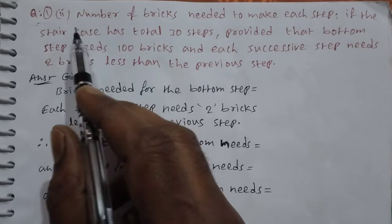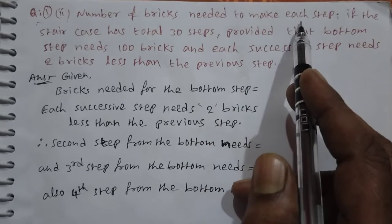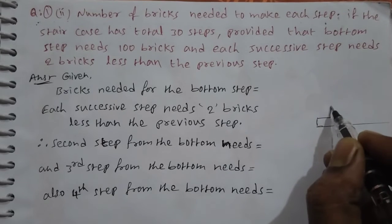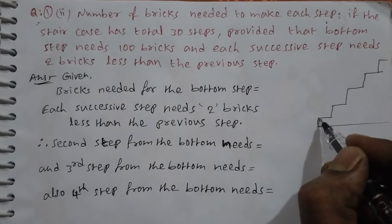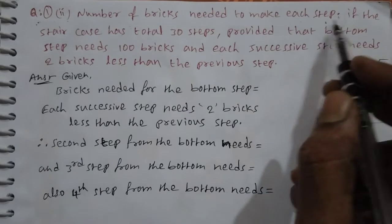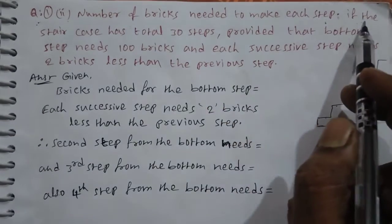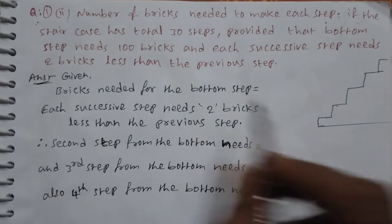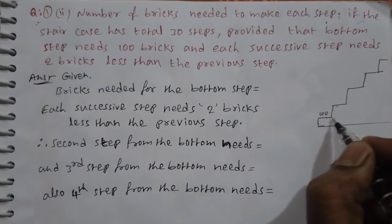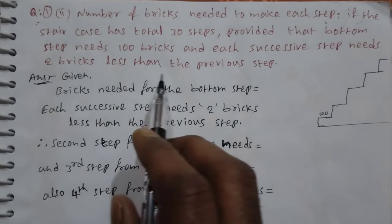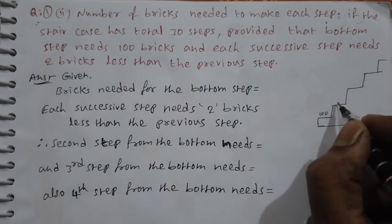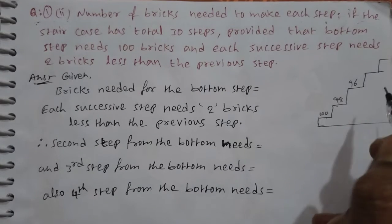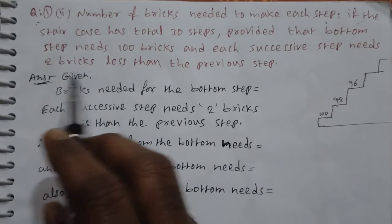First question, second bit: Number of bricks needed to make each step of a staircase with 30 steps. The bottom step needs 100 bricks, and each successive step needs two bricks less than the previous step. So the series is 100, 98, 96, 94, and so on.